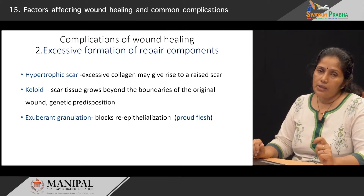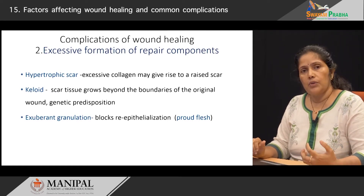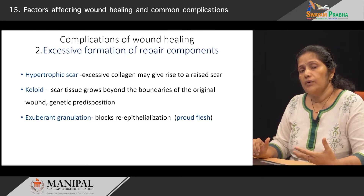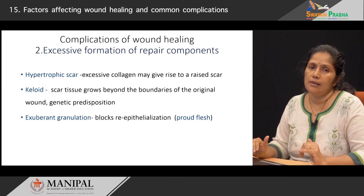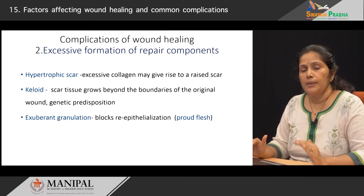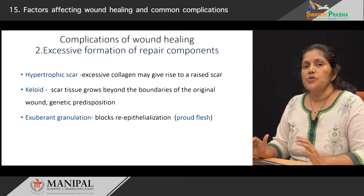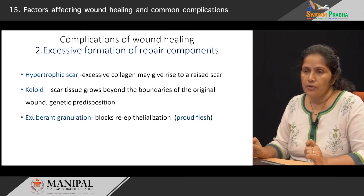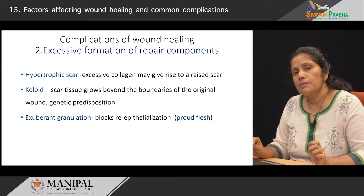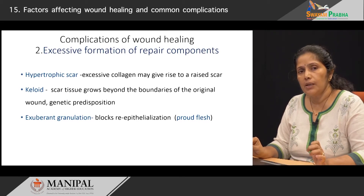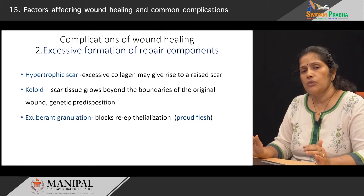The third type of aberration is exuberant granulation tissue formation. This granulation tissue increases so much that it prevents formation of the epithelial layer, making healing incomplete. It is given the interesting name 'proud flesh' and must be prevented — sometimes it may be cauterized or surgically removed to allow epithelialization.